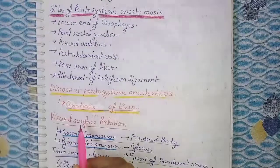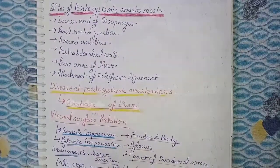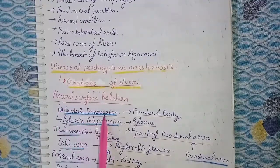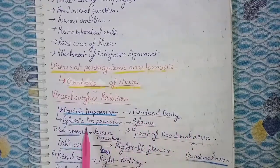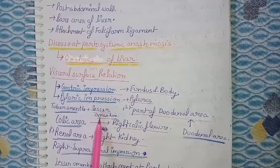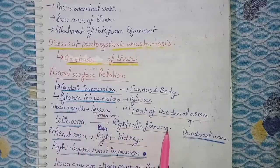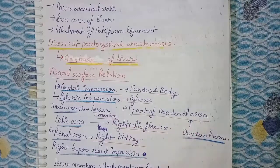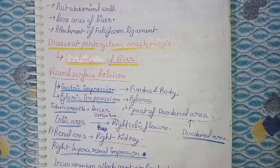Visceral surface relations of the liver: there is a gastric impression on the inferior/visceral surface where the fundus and body of the stomach are present; a pyloric impression where the pylorus is present; tuber omentale where the lesser omentum is present; a colic area with the right colic flexure; a renal area where the right kidney is present; right suprarenal impression; and a duodenal area where the first part of the duodenum is. The lesser omentum is attached at the porta hepatis.